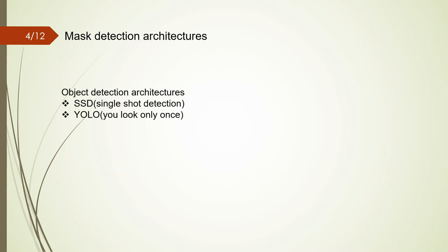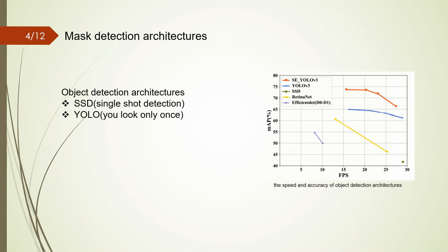SSD and YOLO perform well for two-class face mask detection among object detection structures. Unlike other detection networks, these networks process images in a single shot which makes them faster than others. The speed and accuracy of object detection architectures for recognizing the face mask wearing condition into three classes are clear in the figure.